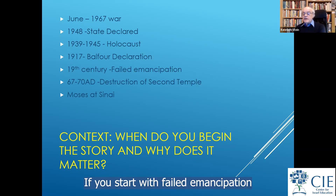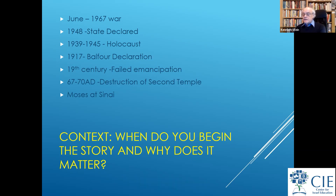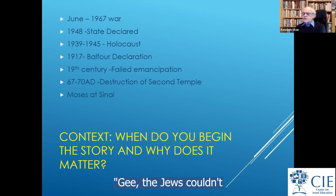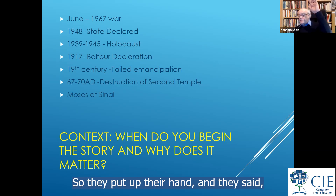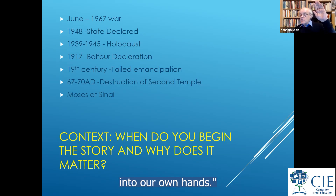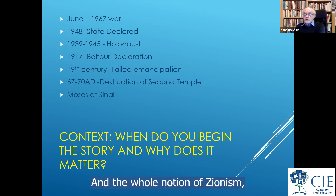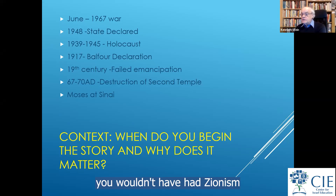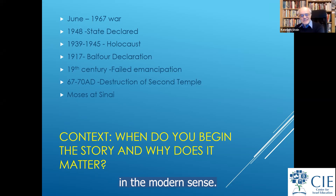If you start with failed emancipation in the 18th and 19th centuries, you're essentially saying the Jews couldn't do what they wanted, so they put up their hand and said, 'We're not going to take it anymore. We're going to take destiny into our own hands.' The whole notion of Zionism — and without failed emancipation, you wouldn't have had Zionism in the modern sense.